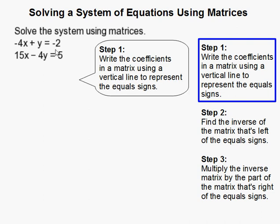down the coefficients in matrix form, and then use a vertical line to separate them, which represents the equal signs. So instead of -4x, I just write -4. Instead of 1y or y, just write 1, and so on. This divides them with the equals.